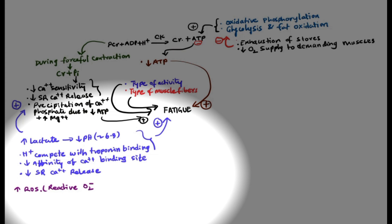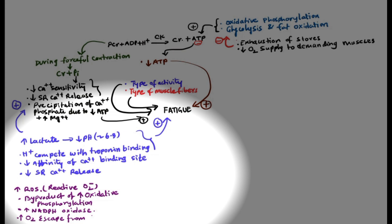The next factor is reactive oxygen species (ROS). ROS generates as a byproduct of the increasing oxidative phosphorylation process in the cytosol as well as the mitochondria of contractile muscle fibers. ROS may be generated from the increased NADPH oxidation of the TCA cycle. Additionally, oxygen molecules may escape from the mitochondria during high-intensity activity, contributing to ROS production. These factors also promote and accelerate fatigue.